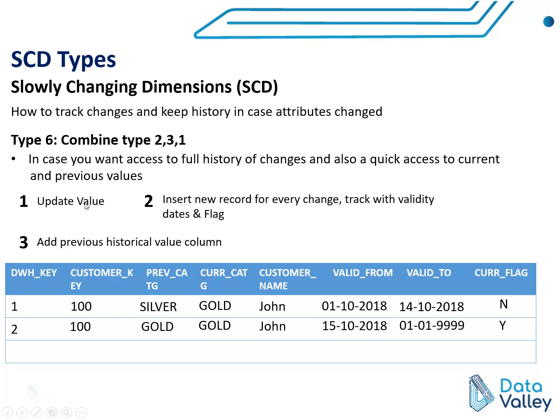As you can see, we applied all three types: we updated values (Type 1), we inserted a new record for the changed data with valid dates and flags to indicate the most recent record (Type 2), and we added one column for the previous value of the tracked attribute (Type 3). If we have multiple attributes, we can add previous columns for all of them and update the same way — inserting a new record and updating valid from, valid to, current category, and current flag.